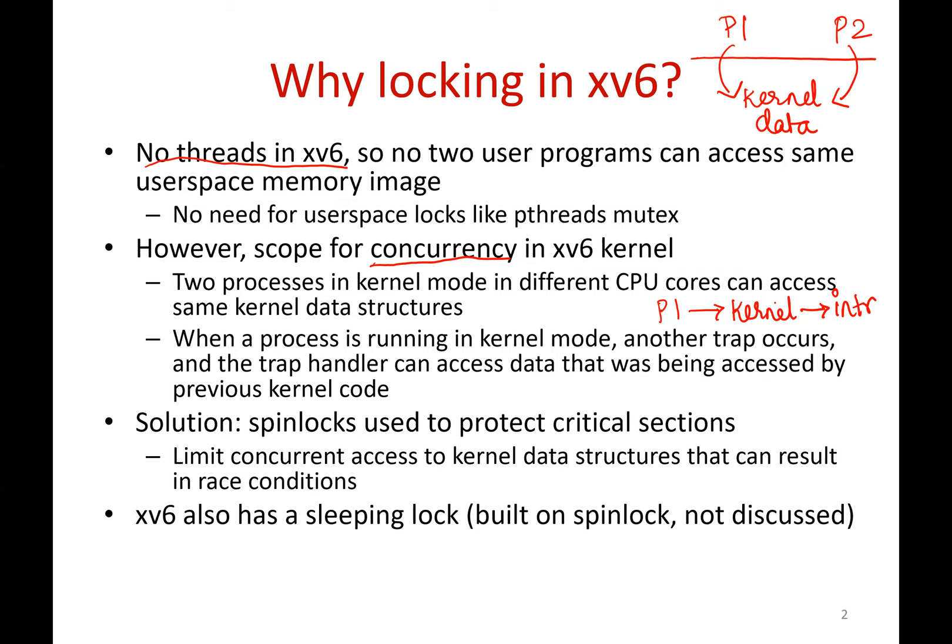For these reasons, xv6 code uses spin locks to protect critical sections. So whenever you are accessing a kernel data structure and there is scope for concurrent access — either from a process on another core or for any other reason — you will use spin locks and hold the lock for as long as you are in the critical section.